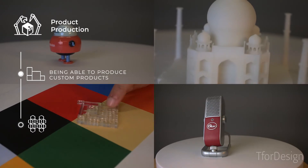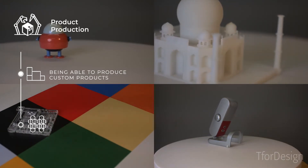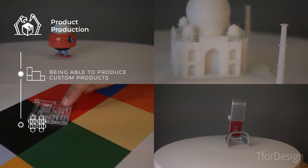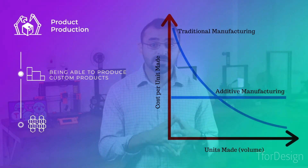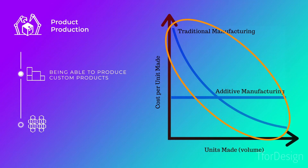3D printing enables you to produce unique custom products on a small scale. For plastic-based applications, injection molding is the traditional counterpart for 3D printing. Both methods can produce plastic products, but the cost models are very different. 3D printing has a fixed cost per unit, while injection molding has a variable cost per unit that decreases the more you produce. This makes 3D printing great for creating custom products on a smaller scale, and it also enables you to produce a different customized version of your product for every individual while keeping the whole thing economical.